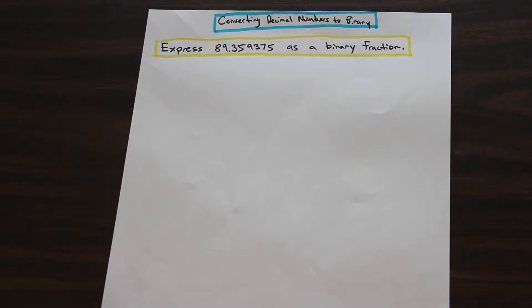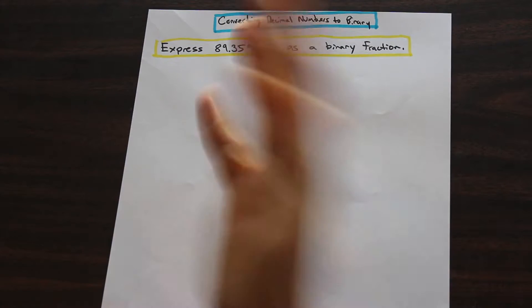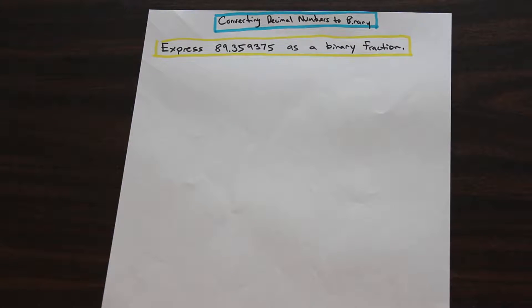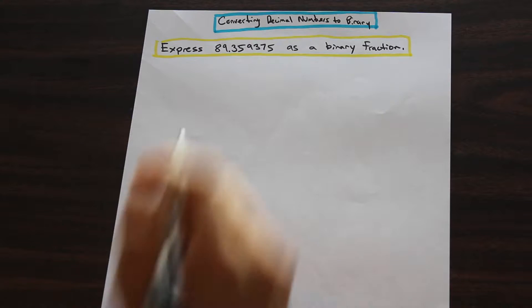Let's get started. The question asks us to express 89.359375 as a binary fraction. So we're going to take this decimal number and express it in computer language as a series of ones and zeros. The binary system is a base 2 system. I'm not going to get too much into the theory, I'll just show you how to do this.